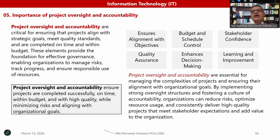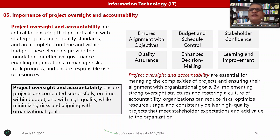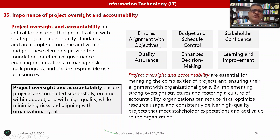Project oversight and accountability ensure that projects are completed successfully — on time, within budget, and at high quality — while minimizing risk and aligning with organizational goals. The main focus areas are: ensuring alignment with objectives, budget, and schedule control, stakeholder confidence, quality assurance, and enhanced decision-making with learning and improvement. Project oversight and accountability are essential for managing complex projects and enhancing their alignment with the organization.